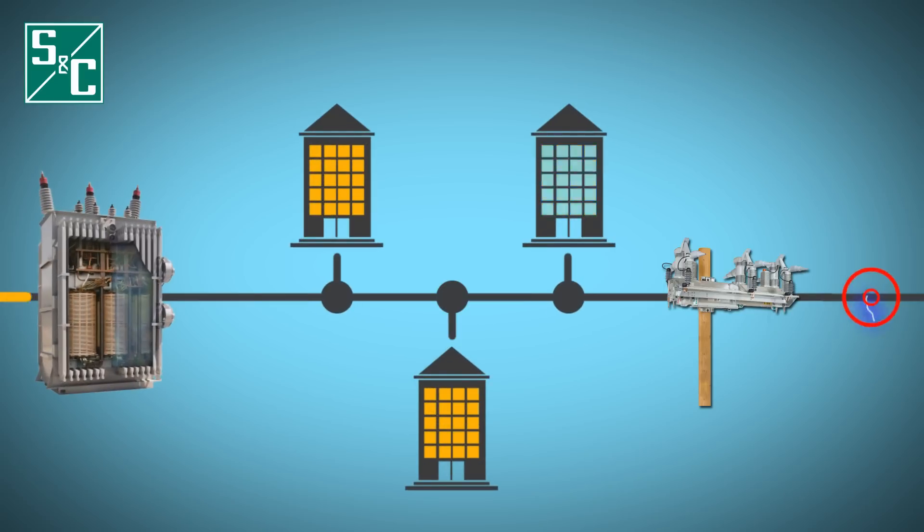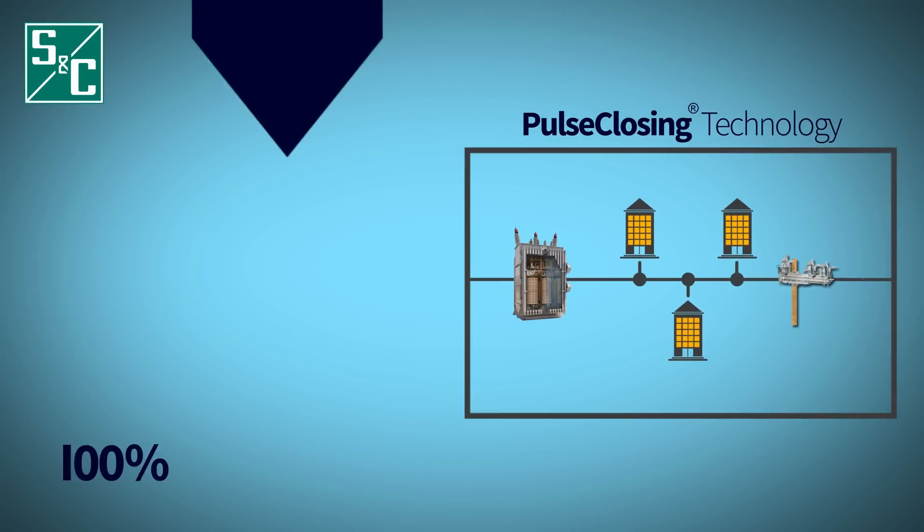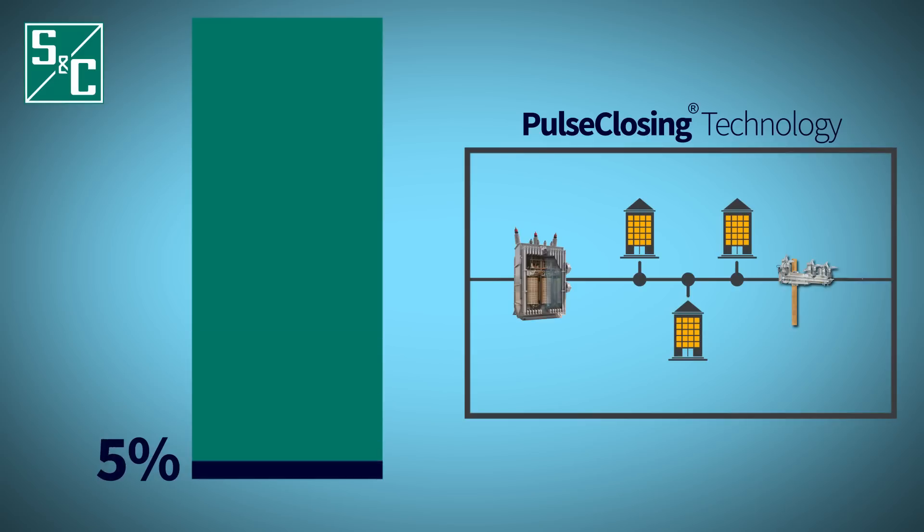Pulse Closing Technology uses a small pulse of current to detect the presence of a fault. This results in less than 5% of the energy to test for the presence of a fault compared to reclosing.